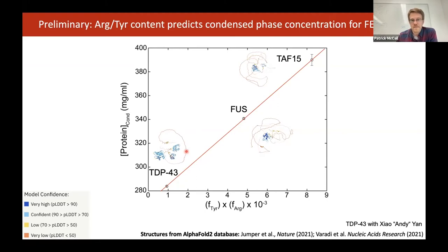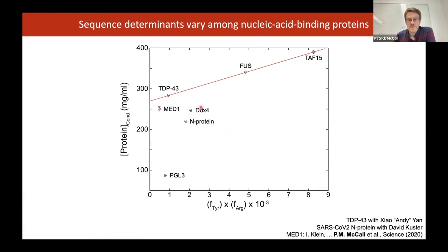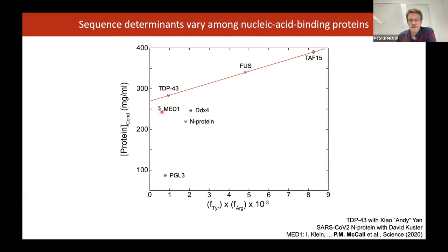Interestingly, this relationship does not hold for all RNA binding proteins. If we look at a different set, including the N-terminal domain of DDX4, the nucleocapsid protein from the coronavirus, one of the components of the mediator complex involved in transcriptional regulation, or PGL3 from C. elegans P granules — all of these also demix in solution in vitro, but have much lower concentrations and do not follow this curve.